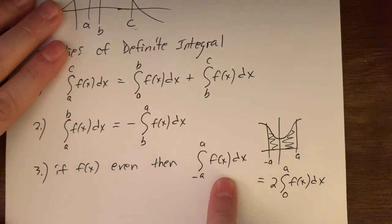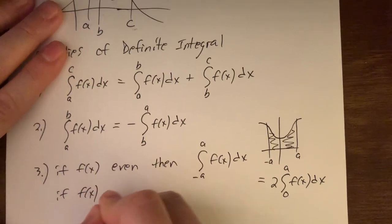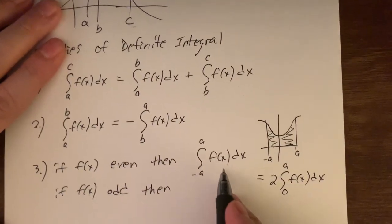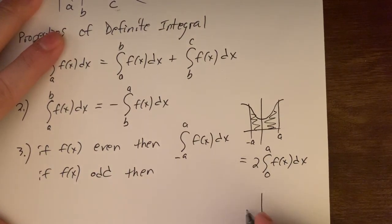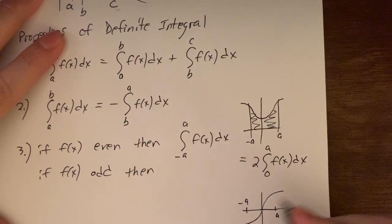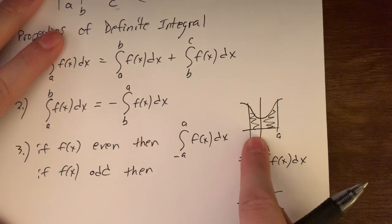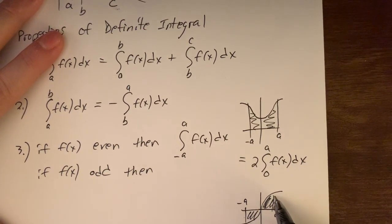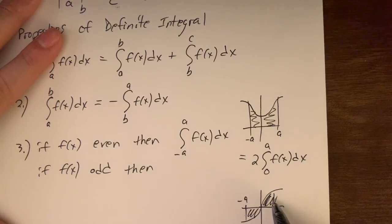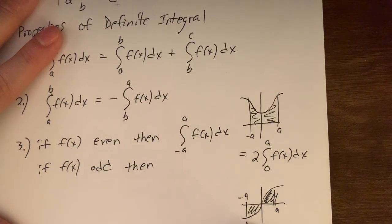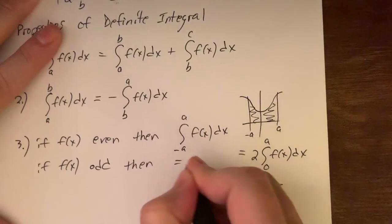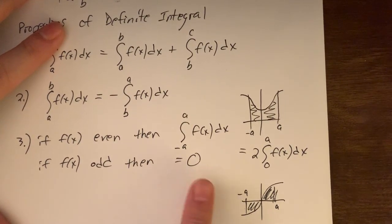If f of x is an odd function and we integrate from negative a to positive a, the symmetry across the origin means the positive area above the x-axis on the upper right is exactly matched by the negative area below the x-axis on the lower left. They cancel completely, so the integral from negative a to positive a of an odd function equals zero.